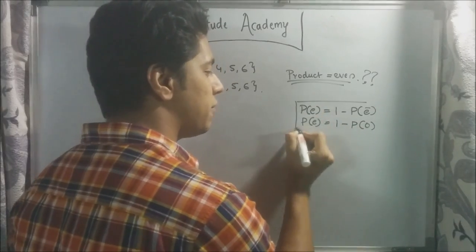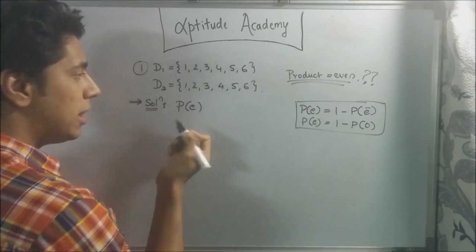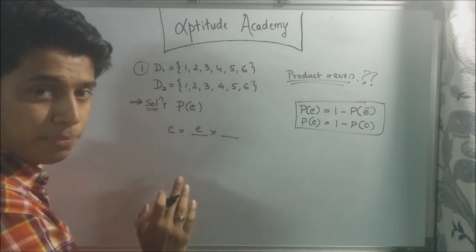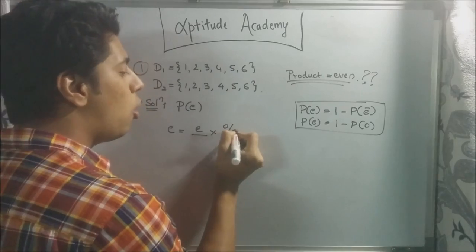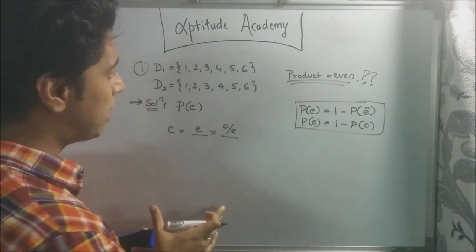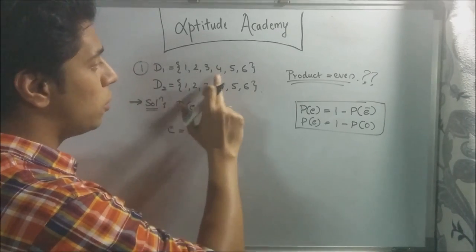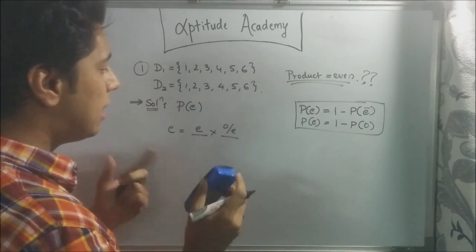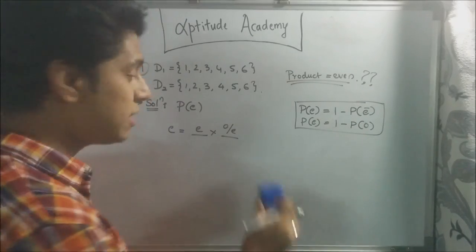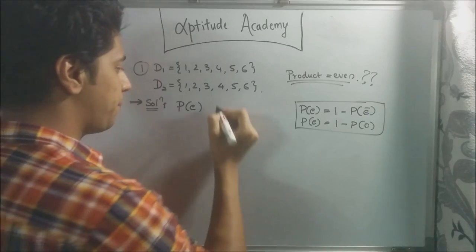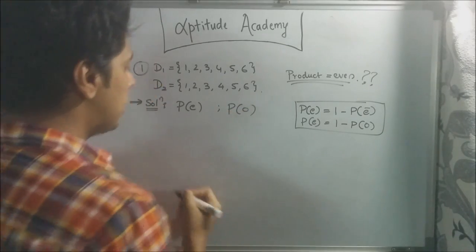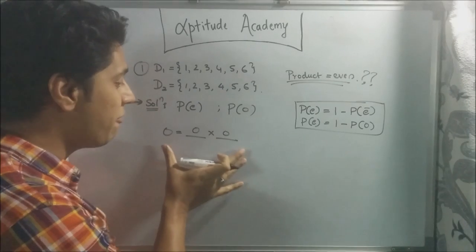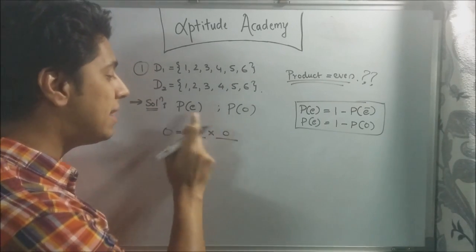Let's find P of O, the probability of the product being odd. For an odd product to form, both numbers have to be odd — this makes life very simple. We need two odd numbers; only then will the product be odd. From our first die, the odd numbers are one, three, and five. From the second die, also one, three, and five. So to fill each place we've got three possibilities, giving us nine total possibilities for an odd product.